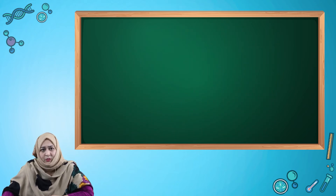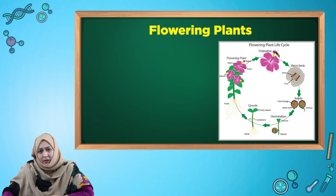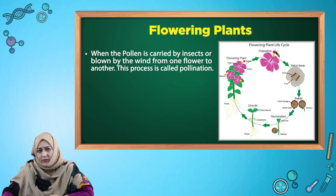Now let's have a look at the life cycle of a flowering plant. When pollen is carried by an insect or blown by the wind from one flower to another, this process is called pollination.